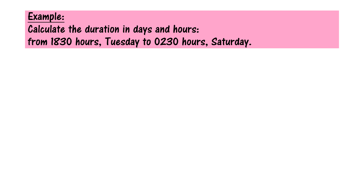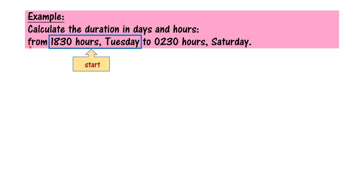Next example: calculate the duration in days and hours from 18.30 hours Tuesday to 00.30 hours on Saturday. 18.30 is 6.30 PM — pukul 6.30 PM, petang. 00.30 hours is 2.30 AM — pukul 2.30 tengah malam, pagi. First, you need to identify the start time and end time. 18.30 hours Tuesday is the start time, because of the word 'from'.